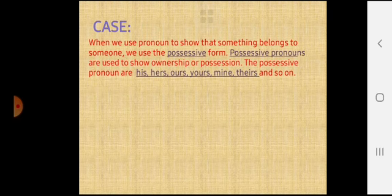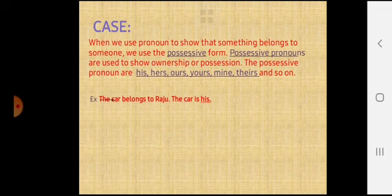When we use pronoun to show that something belongs to someone, we use the possessive form. Possessive pronouns are used to show ownership or possession. The possessive pronouns are his, hers, ours, yours, mine, theirs and so on. The example is, the car belongs to Raju. The car is his. Whose car is it? The car belongs to Raju. And so his is used for Raju. The word his is possessive pronoun. Next one, Ravi and Hemant bought a bat. The bat is theirs. Theirs is a possessive pronoun.